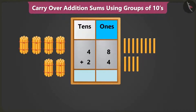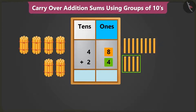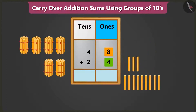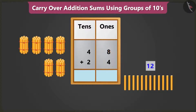First, let's add the numbers in the ones place. We have to add 8 ones to 4 ones. Count after 8: 9, 10, 11 and 12. This means 8 ones and 4 ones add up to 12 ones.